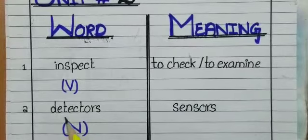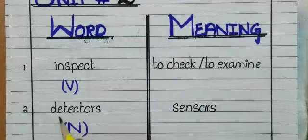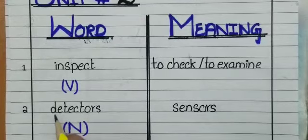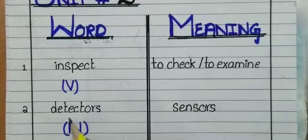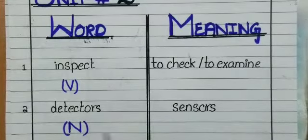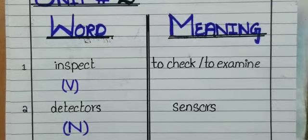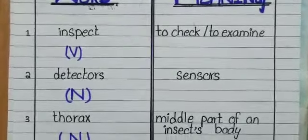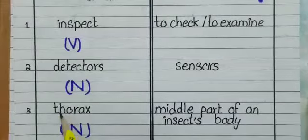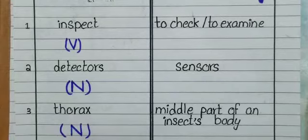Now move to the next word: 'detectors' — D-E-T-E-C-T-O-R-S. Detectors, according to grammar, is a noun. The meaning of detectors is sensors — the parts by which an insect feels.